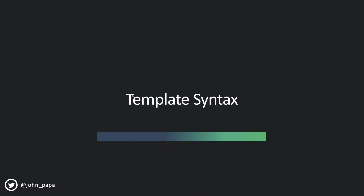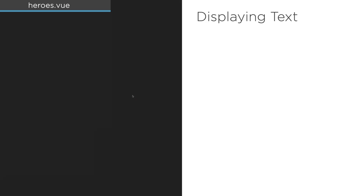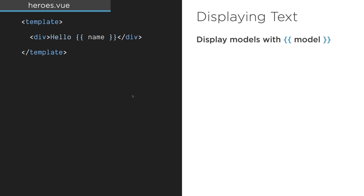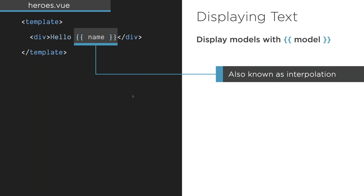Let's take a step back and look at the main pieces of Vue template syntax — the things you need when building an application. First, displaying text: whenever you see double curly braces, that means render the data model between them. So '{{ name }}' renders the name from your component's data model — that's interpolation, a shortcut to render text that has been around in web technologies for a long time. You can also use v-text as an alternative.